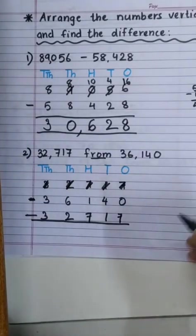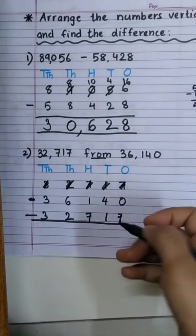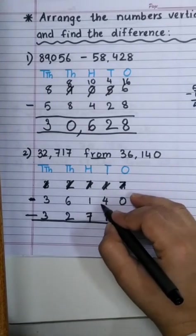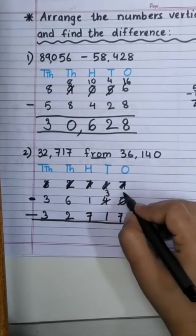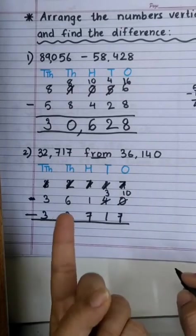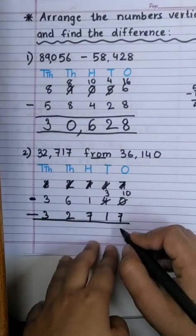Now, 0 minus 7. Of course, 0 is the smallest number. We cannot subtract anything from this. So, it will go and seek help from 4. 10 minus 7 will be? After 7: 8, 9, 10. 3.